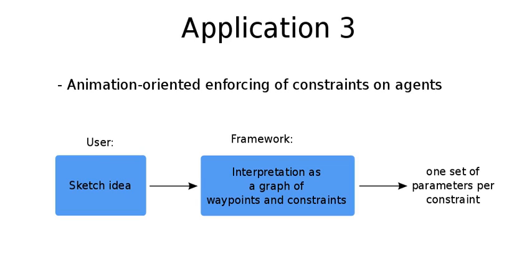In the third and final application, we show how we enforce constraints on agents in an animation-oriented context. In this case, a user starts with a sketch idea of a target behavior. The framework then interprets this as a graph of waypoints and constraints and computes the situation with one set of parameters per constraint corresponding to the wanted behavior.